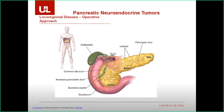There are basically only two pancreas operations, and it depends on tumor location. If the tumor is in the head or uncinate, they need a Whipple operation. This red line is where the portal vein and SMV go underneath the pancreas — if the tumor is in the head or uncinate, you can't remove that area without getting into the pancreatic duct or bile duct, so you have to do a Whipple. Anything to the patient's left in the body and tail: you can do a distal pancreatectomy with or without splenectomy.